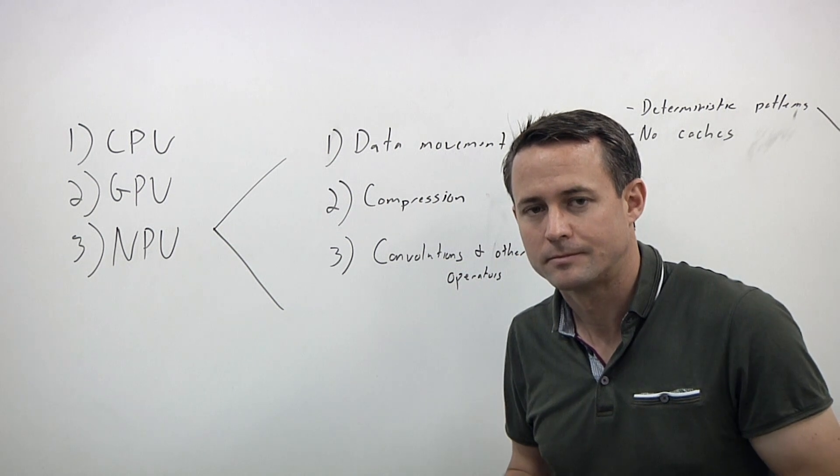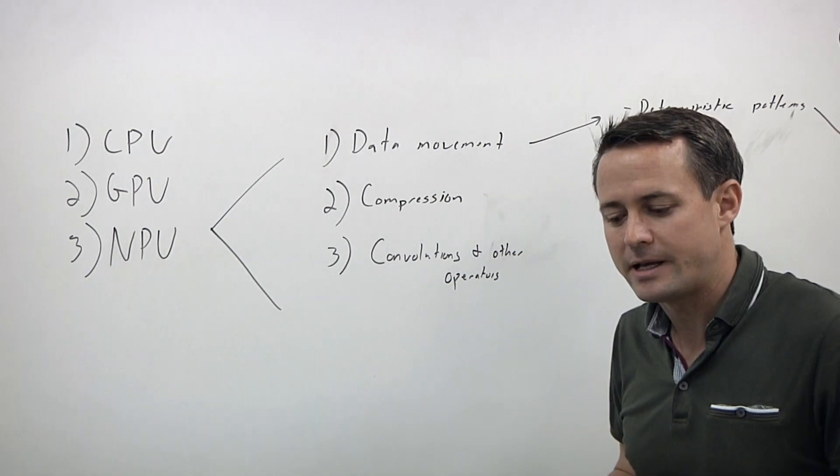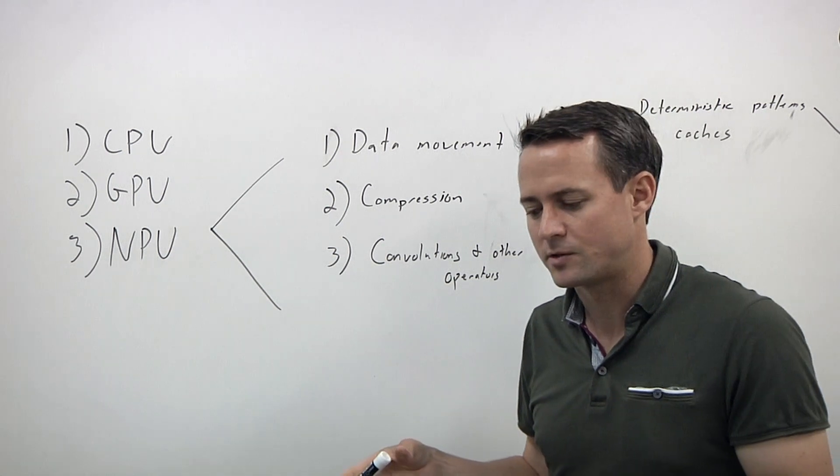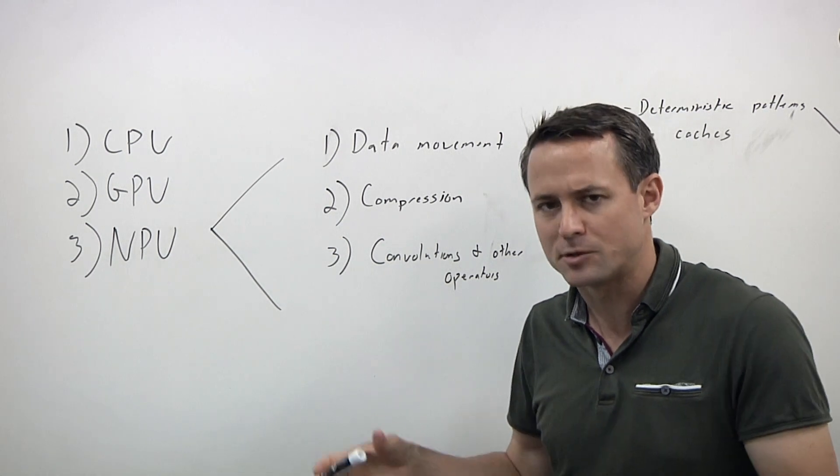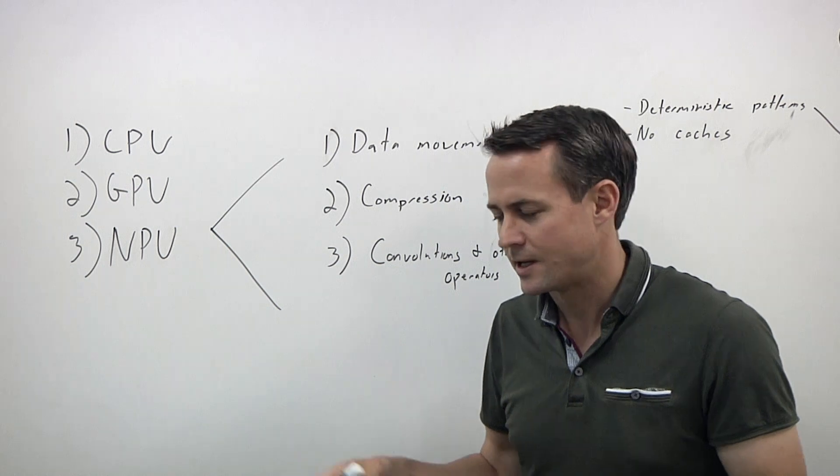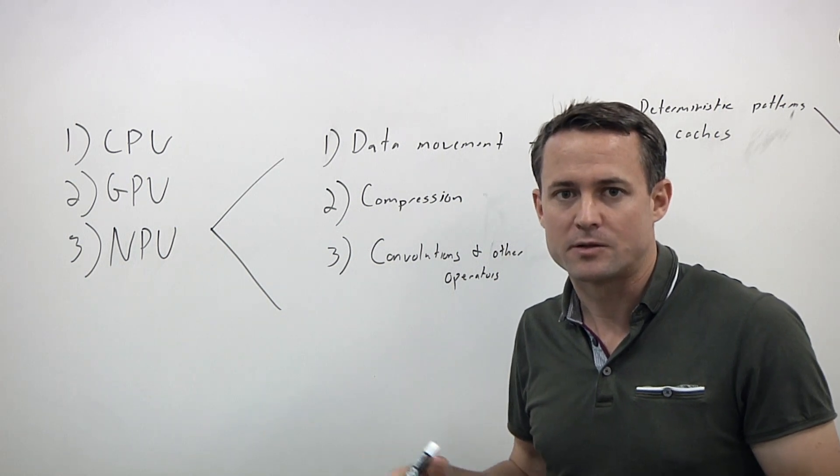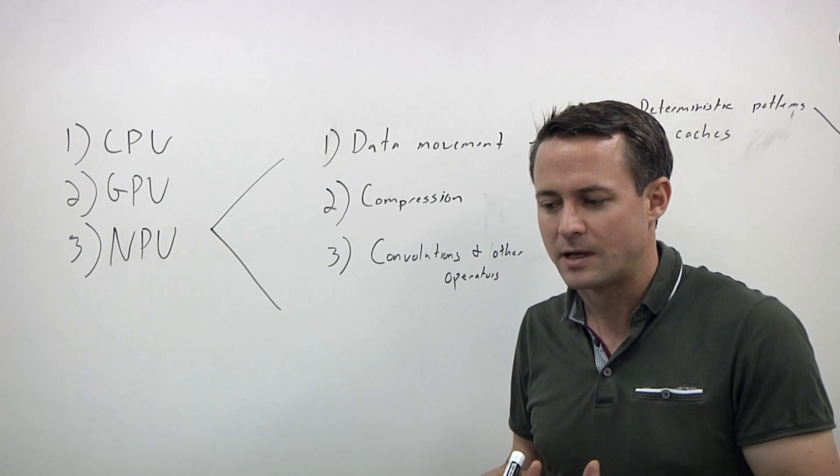Where do things typically go wrong when you're working with these kinds of architectures? It's very easy - a lot of people looked at machine learning processors in the early days and said, I can just put down a whole bunch of ALUs and I'm going to get good performance. But actually, that's the easy part.